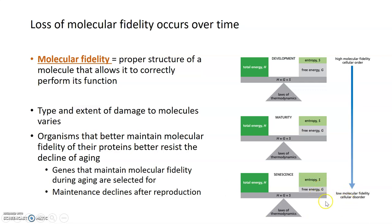If you can shift this balance between entropy and free energy, and select for genes that can help organisms maintain molecular fidelity and resist entropy, you can slow down the process of aging. But after reproduction, this maintenance tends to decline.